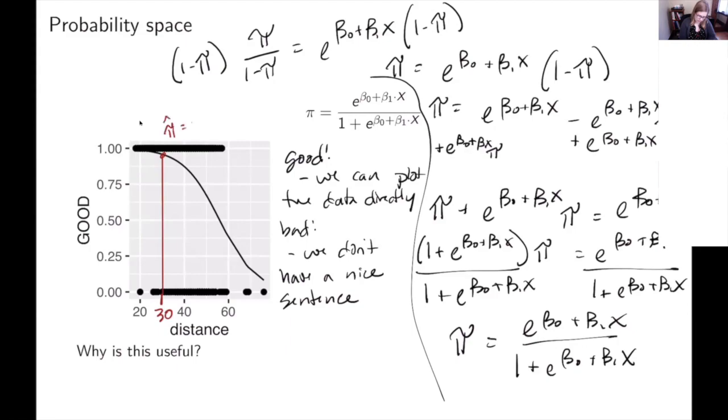If I had pi hat is equal to point nine eight or something, and then I would probably round that to one and say I think if you're 30 yards away, you made the field goal. And then I also might want to know what if I was 60 yards away? I'm going to go up to the model line and make a prediction, and I would say pi hat is equal to 0.37, which I'm going to round to zero. And I'm going to say they did not make the field goal. So I might be interested in this 50 percent point where it switches from predicting that they made the field goal to predicting that they did not make the field goal.